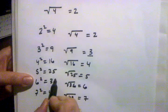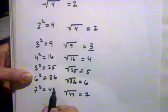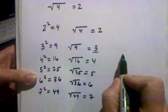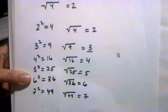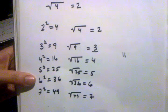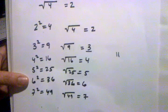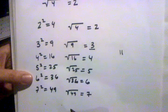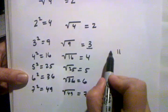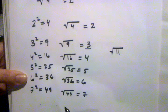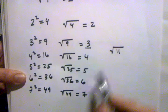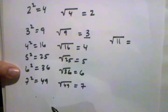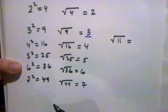Things get tricky if you're given a number that's not a perfect square. For example, eleven — eleven is not a number you'll ever get by multiplying a whole number by itself two times. So if you want to take the square root of eleven, it's not going to be a nice clean whole number; it's going to be a crazy ongoing decimal number.